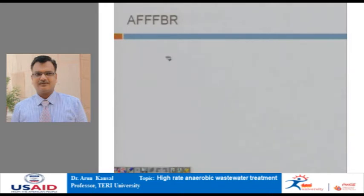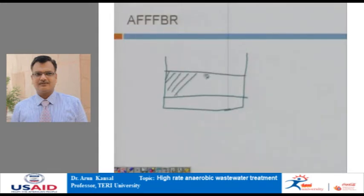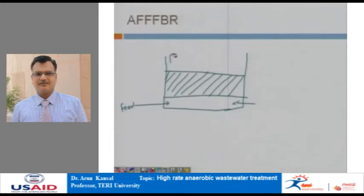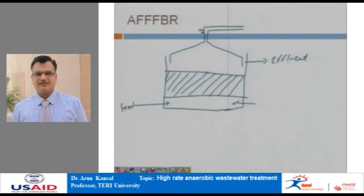The anaerobic fixed film fixed bed reactor is analogous to a trickling filter from the aerobic process. Basically, this reactor consists of a porous media which is fixed, and on this media the anaerobic organisms develop. In upflow mode, we have feed at the bottom, then a gas collector, and the treated effluent is taken from the top. The system is completely enclosed with a gas collector from where the biogas is taken out.